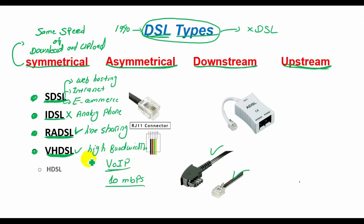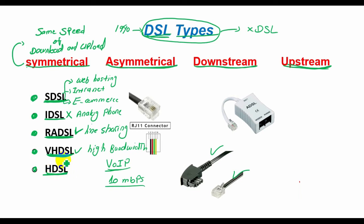High Bit Rate DSL, or HDSL, is a symmetric technology with transmission rates equal in both directions. HDSL does not allow line sharing with analog phones.